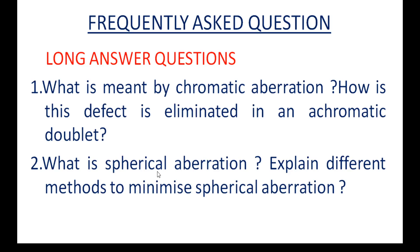Now for important questions from the regular public exam. The first essay question is: What is meant by chromatic aberration? How is this defect eliminated in an achromatic doublet? Chromatic aberration includes longitudinal and lateral chromatic aberration. The second essay question is: What is spherical aberration? Explain different methods to minimize spherical aberration — spherical aberration in complete detail, and the minimization methods in full detail.